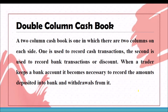Moving to the double column cash book. The variation between single and double column: in the double column cash book there are two different amount columns — one for cash transactions and another for bank transactions. A two-column cash book has two amount columns on each side. One is used to record cash transactions; the second is used to record bank transactions or discount.